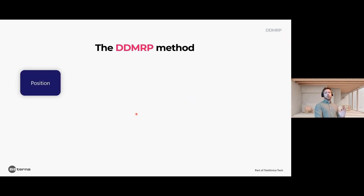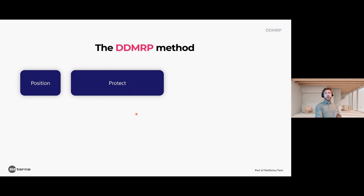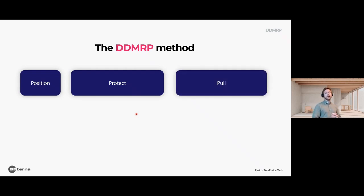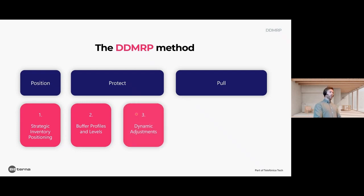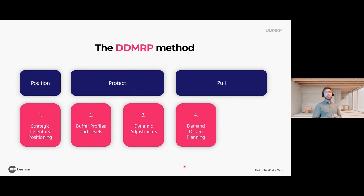We're basically talking about positioning buffer stocks — decoupling points — at strategic places, then managing and protecting these buffers, and executing planning in a pull and priority-based way. That's the core idea. In more detail, the method has five components: first, strategic inventory positioning — where to put the stock buffers; second, determining the size or profile of these buffers; third, having them adjust dynamically according to actual usage and demand; and fourth and fifth, the order generation and execution part of the process.